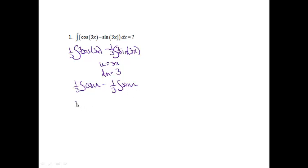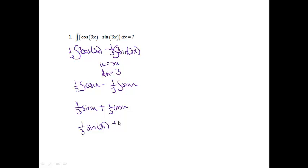Now let's just remember what those equal. The integral of cosine is simply sine, so it's going to be 1/3 sine u minus — the integral of sine is actually negative cosine — so this actually will be plus 1/3 cosine u. Now we just need to plug our u's back in, so it'll be 1/3 sine of 3x plus 1/3 cosine of 3x plus C.